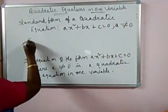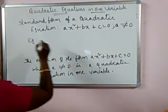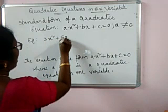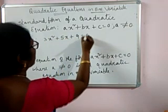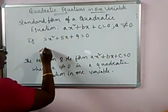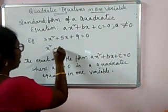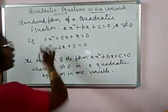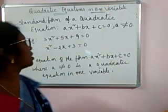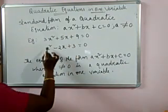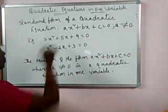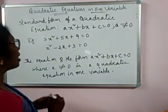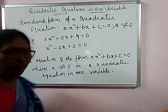Let me give you a few examples. 3x square plus 5x plus 9 is equal to 0. x square minus 2x plus 3 is equal to 0. These all are examples of quadratic equations because the highest power of the variable is 2, and there is only one variable, x.